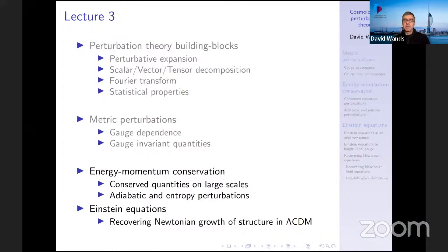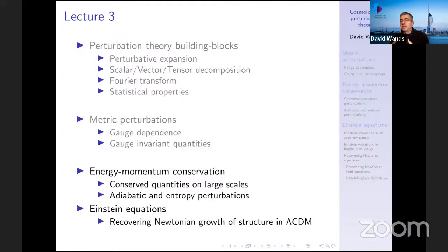Last lecture I was describing the gauge dependence of these perturbations and gave a long list of different possible ways of constructing gauge invariant quantities. As I emphasize, these are really not unique, because the variety of gauge invariant quantities we can construct are really a manifestation of how many of these can be interpreted simply as choices of gauge in which to study phenomena such as density or pressure waves. There are many different gauge invariant combinations used in the literature.